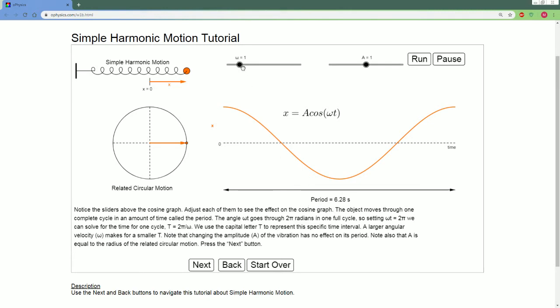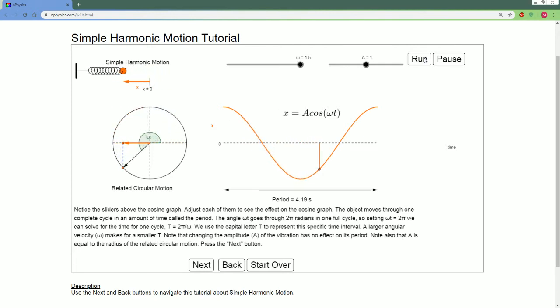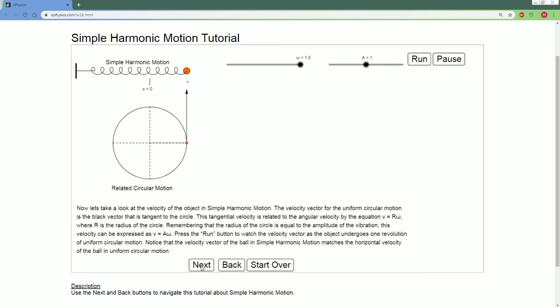Watch as I increase the acceleration. Notice what happens to the period. It gets smaller and smaller. Let's run it now with a very fast angular velocity. You would say that it completes the cycle, the revolution, quicker. Why? Because there is more angular velocity.